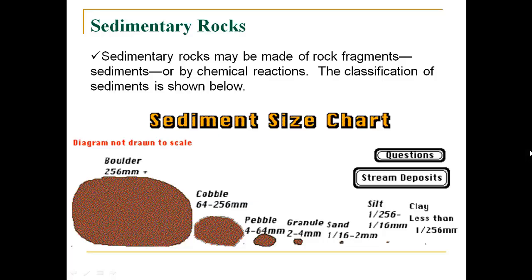You will understand what sedimentary rocks are. The name itself suggests that sedimentary rocks are mainly formed due to deposition of sediments. They may be made up of rock fragments, debris, broken fragments of weathered rock, or by chemical reactions. The classification of sediments by particle size includes: boulder (256 mm+), cobble (64–256 mm), pebble (4–64 mm), granule (2–4 mm), sand (1/16–2 mm), silt (1/256–1/16 mm), and clay (less than 1/256 mm).